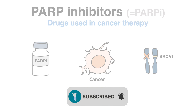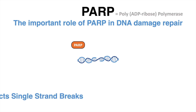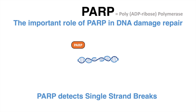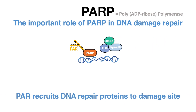As the name already suggests, PARP inhibitors inhibit PARP. PARP is short for poly-ADP-ribose polymerase, and those enzymes belong to a protein family whose members are involved in DNA repair. PARP proteins detect DNA damage in the form of single-strand breaks. Once PARP has bound to the DNA, it changes its structure and begins to synthesize a chain of polymeric ADP-ribose, short PAR.